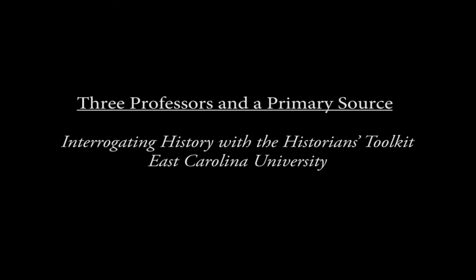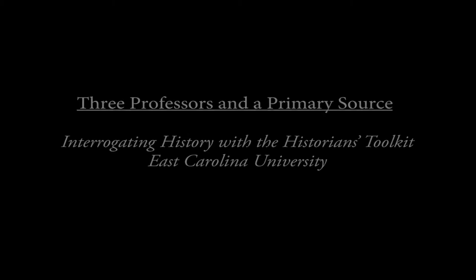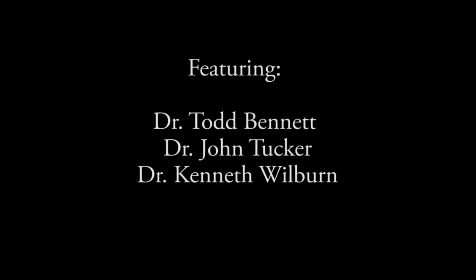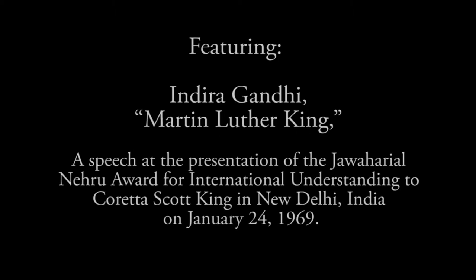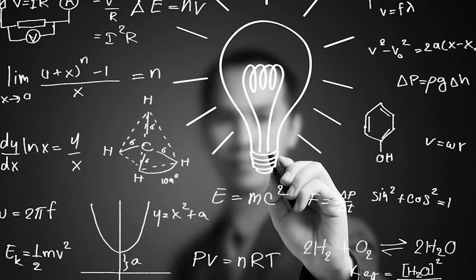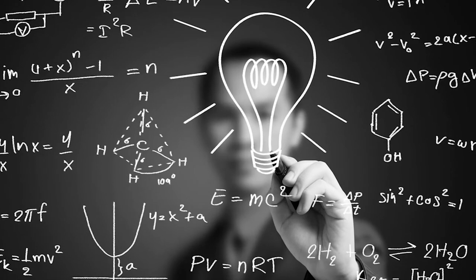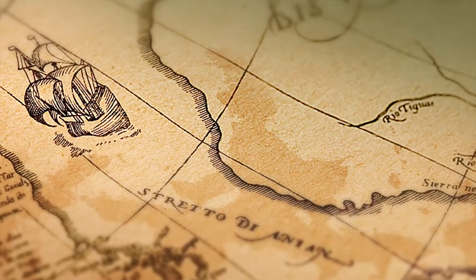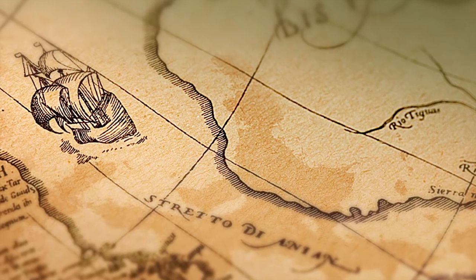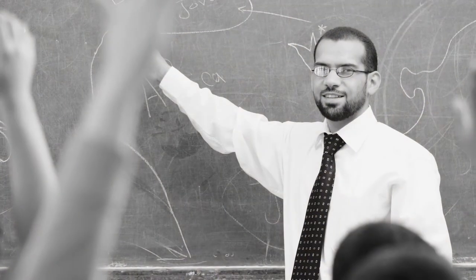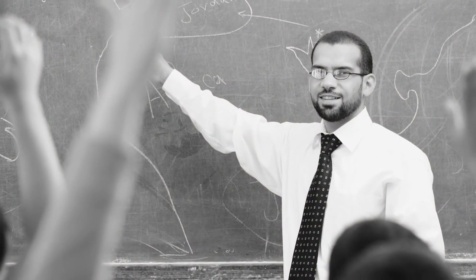Welcome to Three Professors and a Primary Source, the Historian's Toolkit for Interrogating Primary Sources. Three Professors and a Primary Source is an exercise that shows students how historians do history. Historians interrogate a source for six pieces of information and use this information as the basis of their analysis. This video introduces pre-service high school teachers to the initial six interrogatory questions that historians apply to every source.